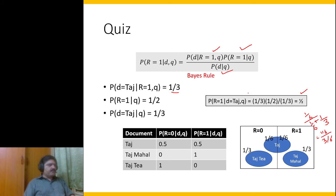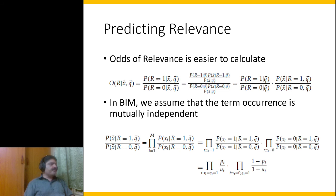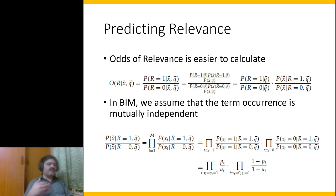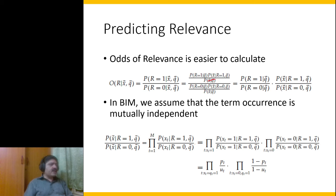Can we make this computation simpler? Sometimes computing odds is much easier than computing probabilities. The odds of relevance is simply P(r=1) / P(r=0) given a document. This can be expanded using Bayes rule, and note that the denominators P(d) cancel away, leaving only the numerators.